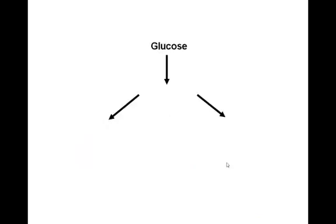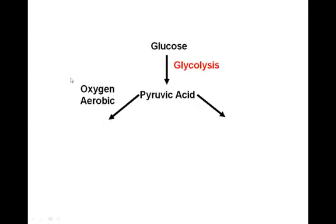What are the different steps of cellular respiration? Glucose, the sugar molecule, undergoes a process called glycolysis, which results in an intermediate molecule called pyruvic acid. At this point there's a decision: in the presence of oxygen, the cell can undergo aerobic respiration, or in the absence of oxygen the cell will undergo, in some cases, anaerobic respiration.